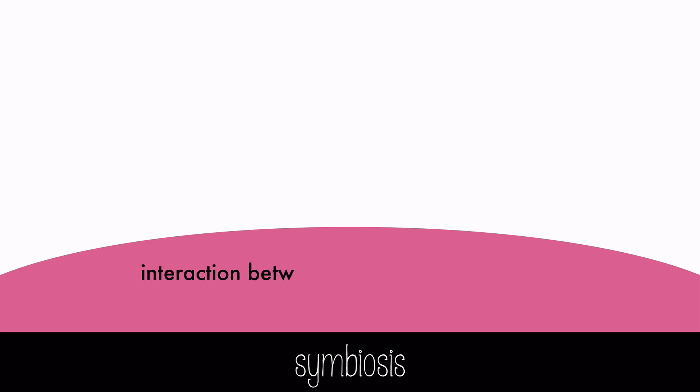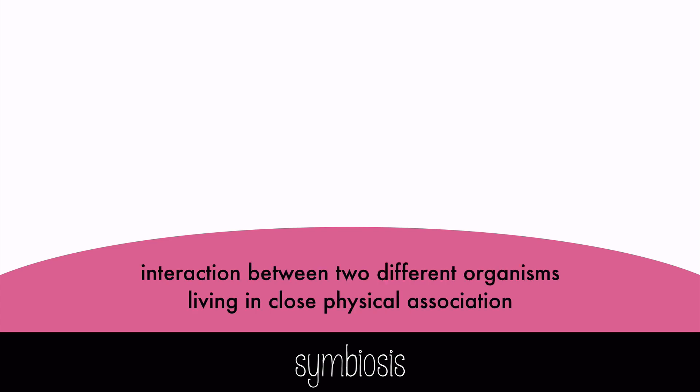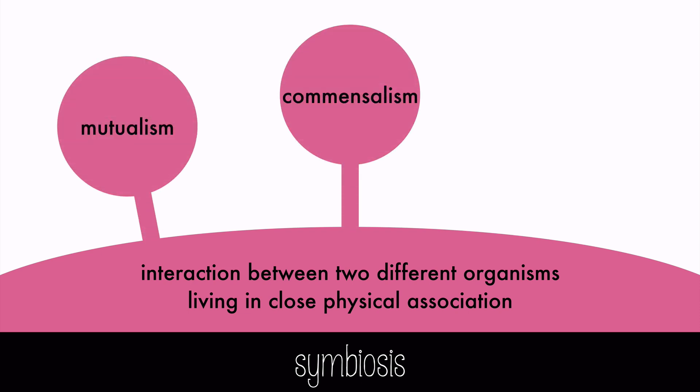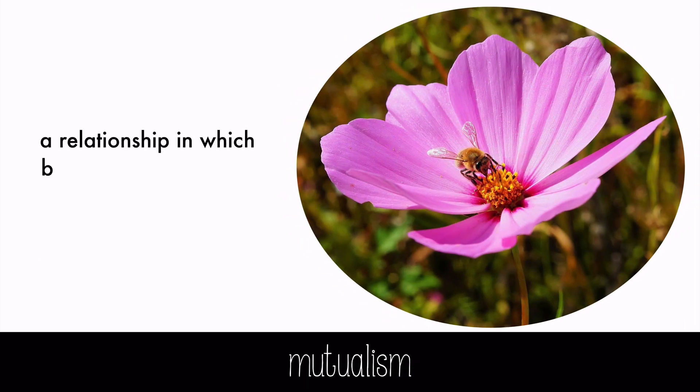Symbiosis is an interaction between two different organisms living in close physical association. There are three types of symbiosis: mutualism, commensalism, and parasitism. Mutualism is a relationship in which both organisms derive some benefit. An example is flowers and their pollinators, like bees. Flowers provide food, and the pollinators carry pollen to other flowers. It's a mutual benefit to both species.